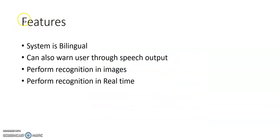Finally, these are the features of the system. Since in Mauritius the most commonly used languages are English and French, we decided to make the system bilingual. The user can switch between English and French based on preference. The application can also warn the user through speech output — the detected sign will be announced through speech. And as mentioned earlier, it can perform recognition both on images and in real time.